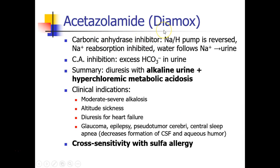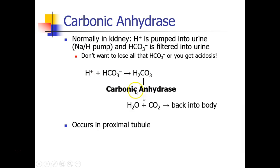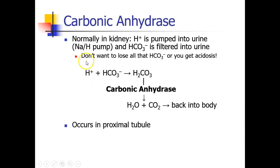The medication acetazolamide, or Diamox, is a carbonic anhydrase inhibitor. When we inhibit this enzyme, the whole equation starts to back up. As we develop more and more bicarb and hydrogen ion building up, the pump that exchanges sodium for hydrogen ion reverses. We will have less ability to pump sodium out of the renal tubule, because there isn't enough room for hydrogen ion to come into the tubule, since the equation is backed up once the carbonic anhydrase enzyme is blocked.